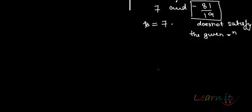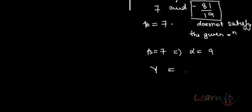With β = 7, we get α = β + 2 = 9, and γ = 11 - 2β = 11 - 14 = -3. So the three roots are 9, 7, and -3.